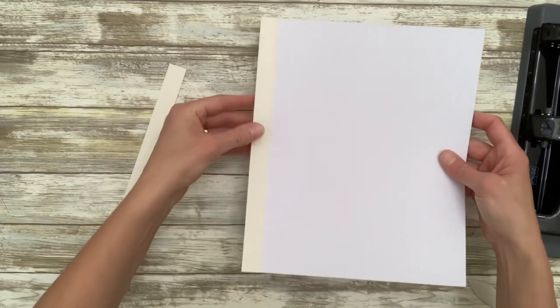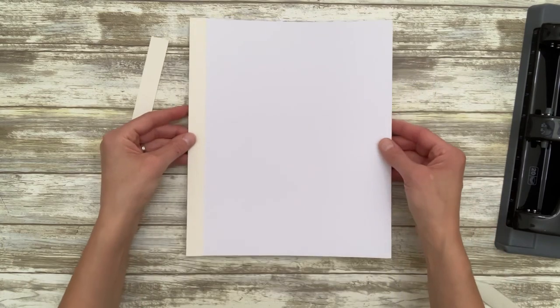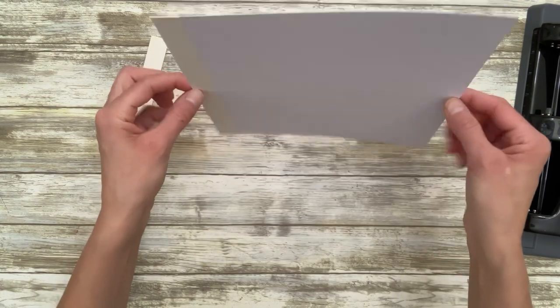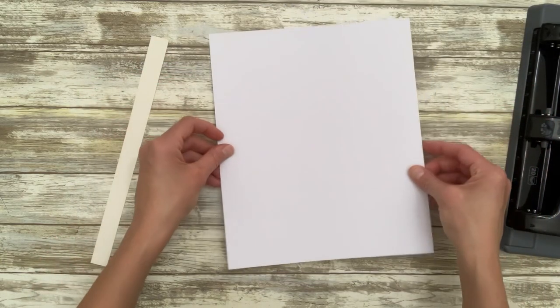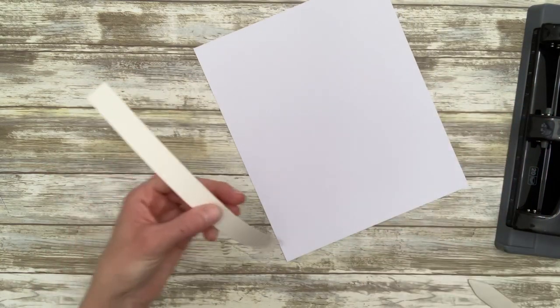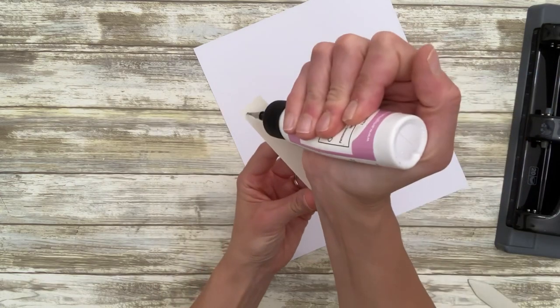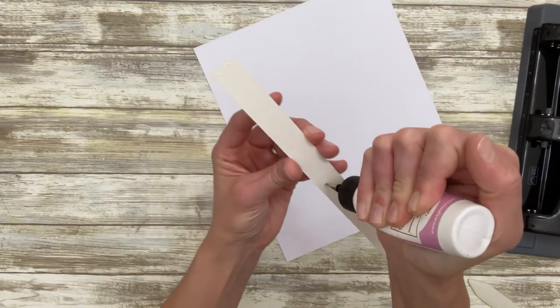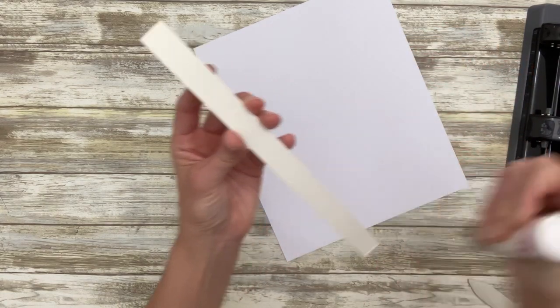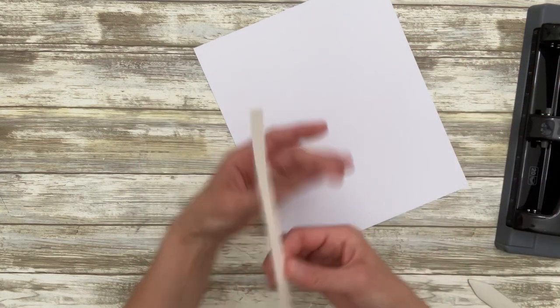So now we're going to turn this over so that the same side with the strip is still on the left, and we are going to adhere our other piece to that same edge, just on the opposite side of the paper.